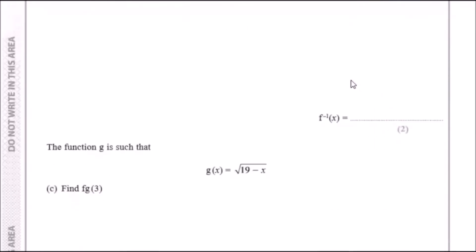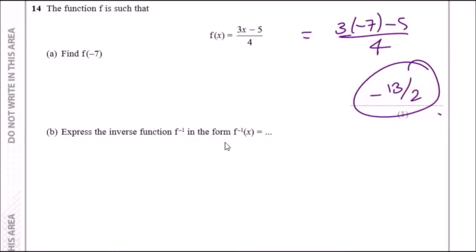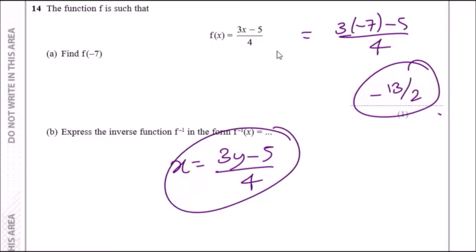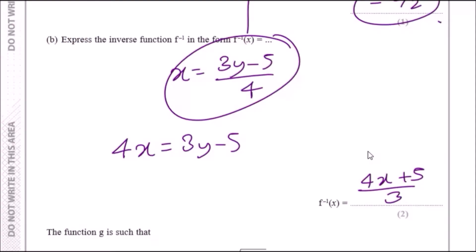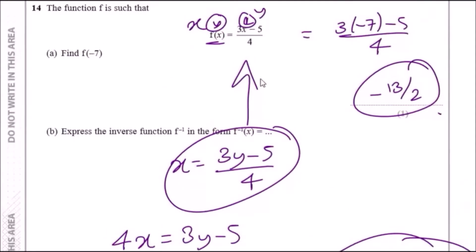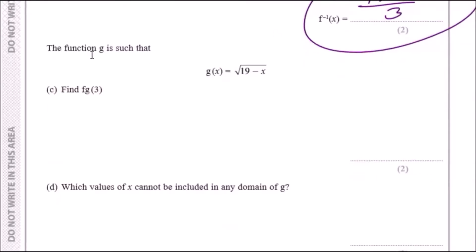Now express the inverse function. The easy way to look at it: replace f(x) with y, then swap the x's and y's, so you get x = (3y − 5)/4. Now make y the subject. Multiply both sides by 4 to clear the fraction: 4x = 3y − 5. Then add 5 and divide by 3, giving f⁻¹(x) = (4x + 5)/3. That's your inverse — literally so easy.